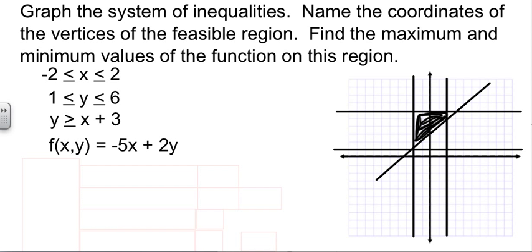Now, we've got our graph. We've found the right region to shade. It says, name the coordinates of the vertices of the feasible region. That means name the corners. How many corners do we have? 1, 2, 3, 4. We have four corners. They are at negative 2, 1, negative 2, 6, positive 2, 6, and positive 2, 5. I can read them right off the graph.